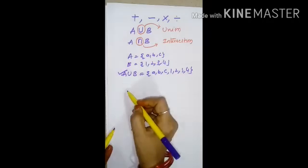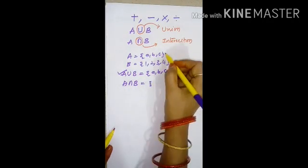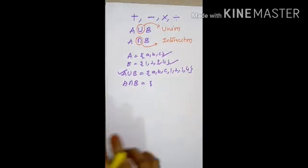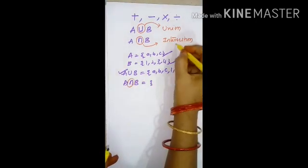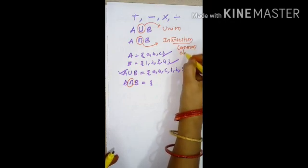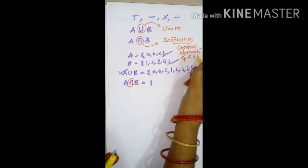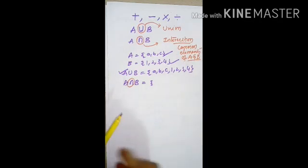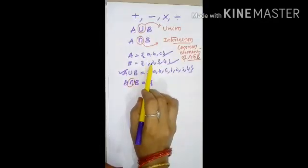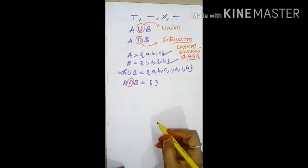What is intersection? A intersection B. Intersection means common elements of A and B. What are the common elements? There are no common elements. This indicates empty set.